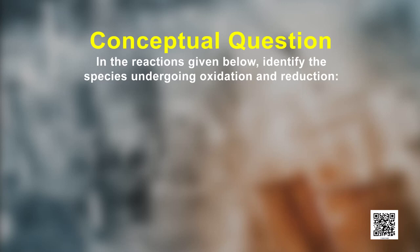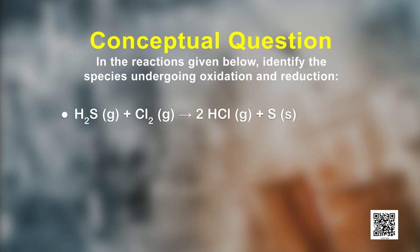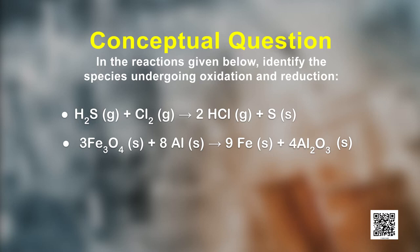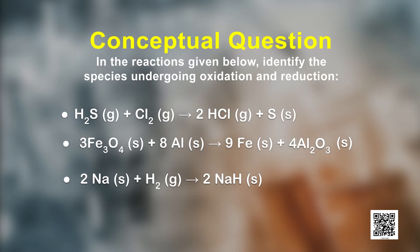Let us understand oxidation and reduction with the help of an example. In the reaction given here, identify the species undergoing oxidation and reduction. In the first reaction, hydrogen sulfide H2S is oxidized because a more electronegative element chlorine is added to it, or a more electropositive element hydrogen has been removed from sulfur. Whereas chlorine is reduced due to addition of hydrogen to it. In the second reaction, aluminum is oxidized because oxygen is added to it. Fe3O4 is reduced because oxygen has been removed from it. In the third reaction, sodium is oxidized and hydrogen is reduced.